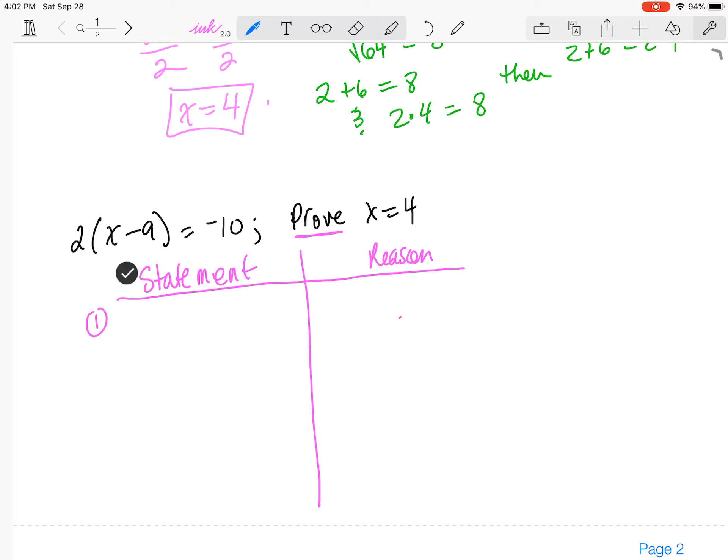All right, and my first row is I'm going to restate what I'm given. So I'm given 2 times x minus 9 is equal to negative 10, and that's given.